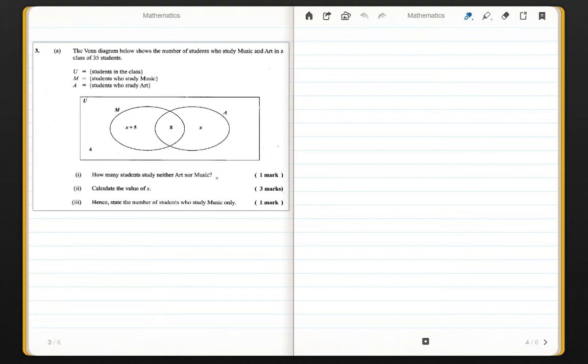The answer to Part 1, how many students study neither art nor music? The answer to that is simply 4. Part 1, the answer is 4 study neither.